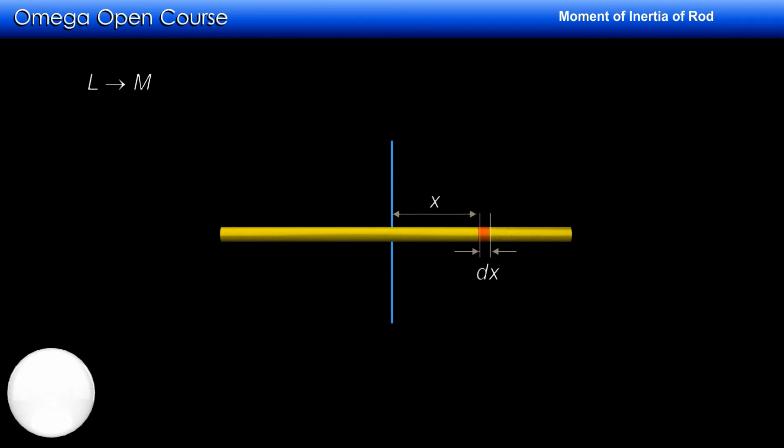Since the mass of l length of rod is m, from unitary method we can say that mass of dx length of rod is m by l into dx.